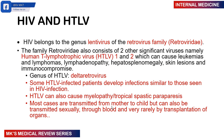Retroviruses multiply by first forming RNA, then they form DNA that gets embedded into the host genome. The human T-lymphotropic viruses — HTLV-1 and HTLV-2 — actually belong to the genus delta retrovirus, not lentivirus. These have the capability of causing leukemias, lymphomas, lymphadenopathy, hepatosplenomegaly, skin lesions, and immunosuppression.